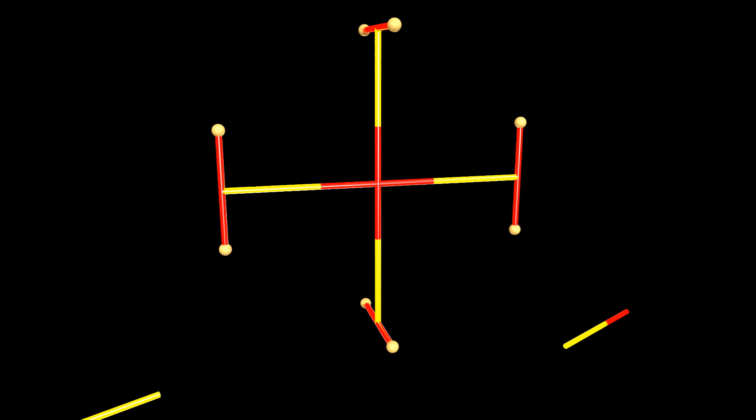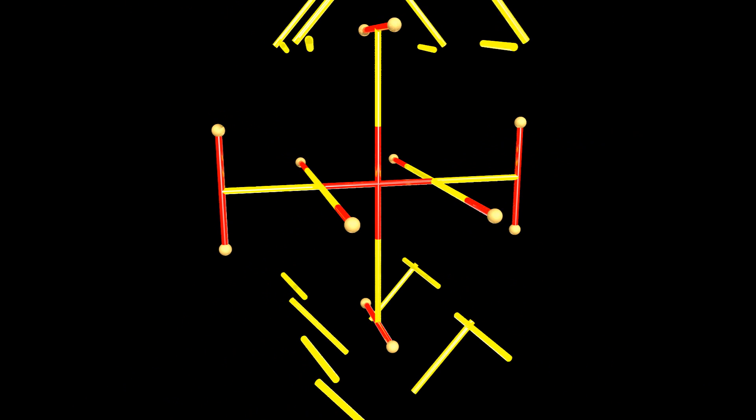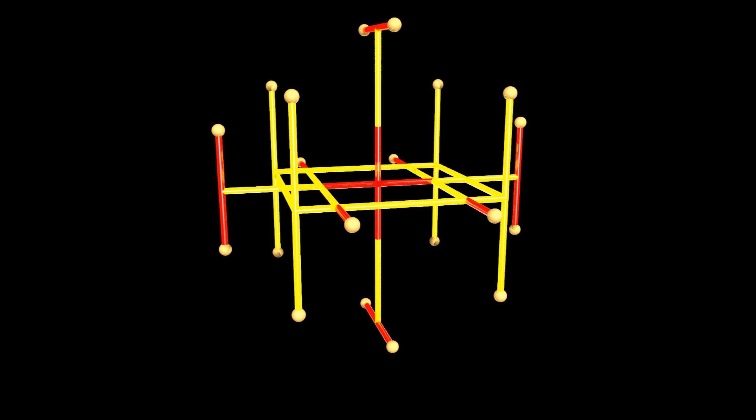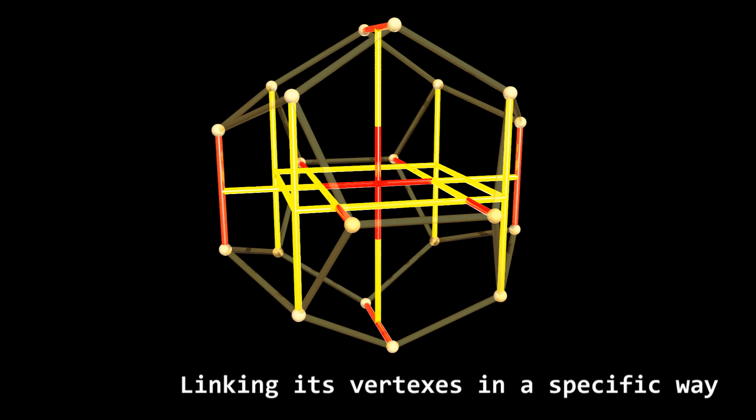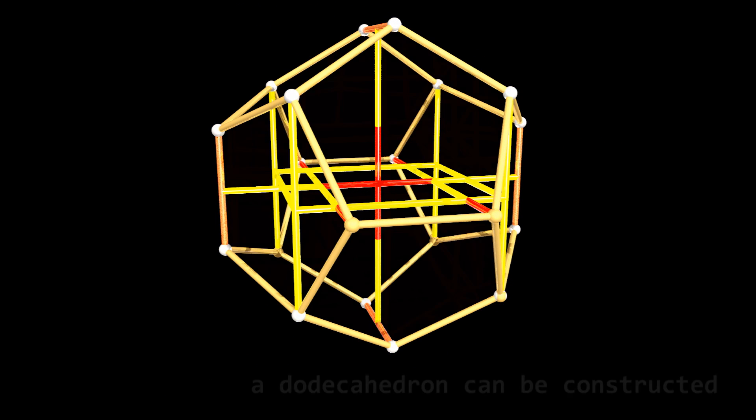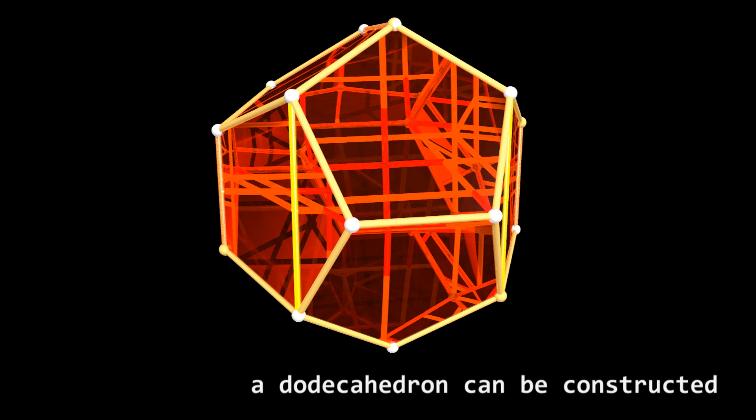Using golden segments and their short and long parts, we can build a peculiar construction. Linking its vertices in a specific way, a dodecahedron can be constructed.